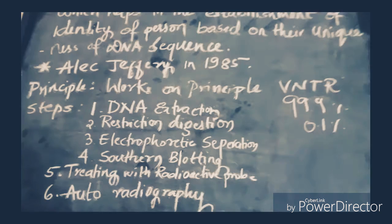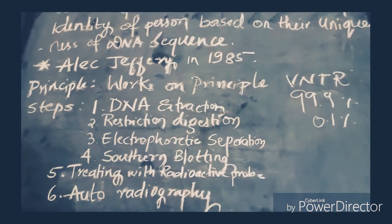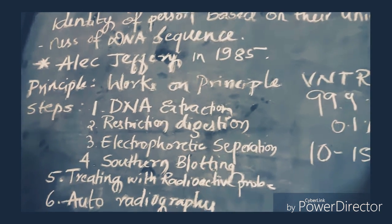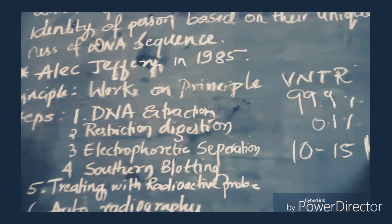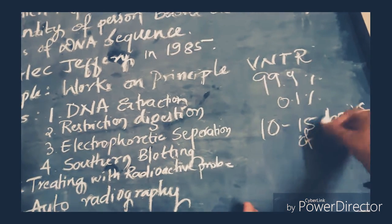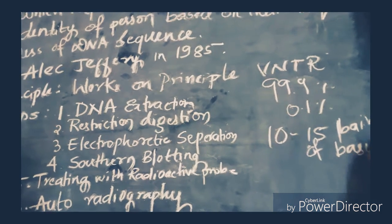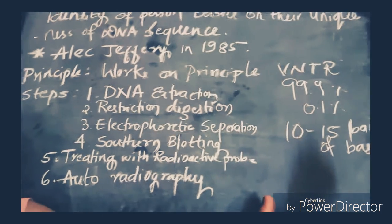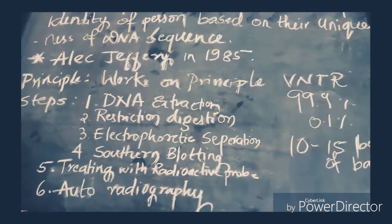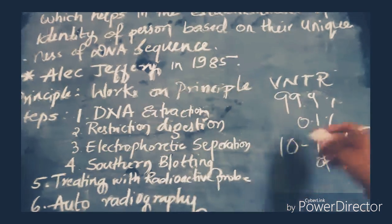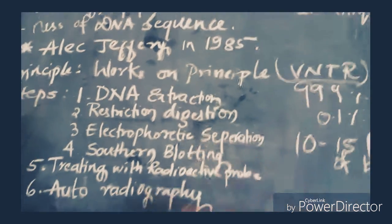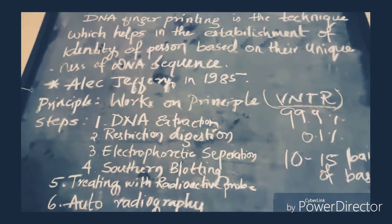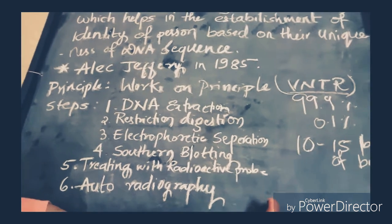10 to 15 base pairs differ. They are unusual and are repeated several times and they are termed as VNTR, that is variable number tandem repeats. On this principle only, the DNA fingerprinting works.